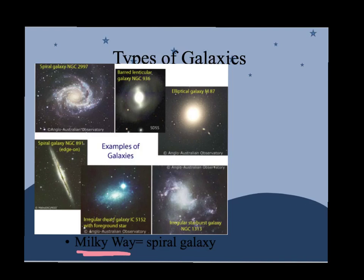We are in the Milky Way galaxy, so this is what our galaxy looks like. Some other types: we have an elliptical galaxy, another spiral galaxy from a different viewpoint, a starburst, a dwarf, and an irregular one. So there's a bunch of different kinds. The important one, though, is the spiral, because that's the one we're in.